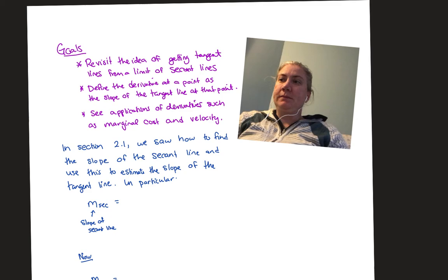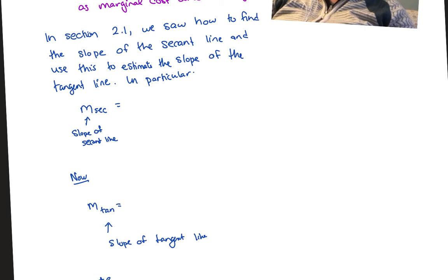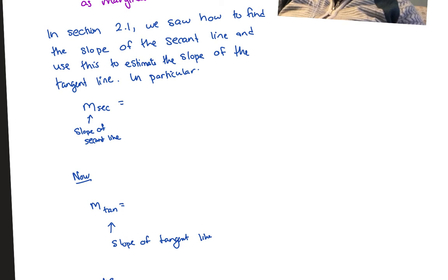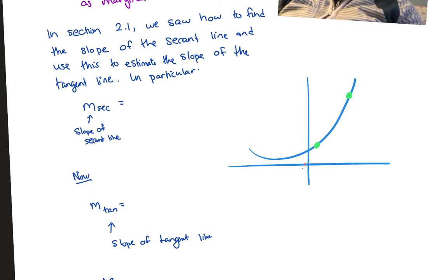If you remember from section 2.1, we saw how to find the slope of secant lines and use this to estimate the slope of the tangent line. To find the secant line, we found two different points on the graph of a function, drew the straight line between those two points, and that was our secant line. If this first point was (a, f(a)) and the second point was (b, f(b)), then the slope of that line was f(b) minus f(a) over b minus a — the change in y over the change in x.